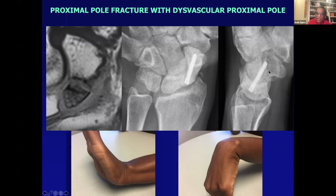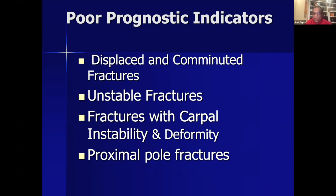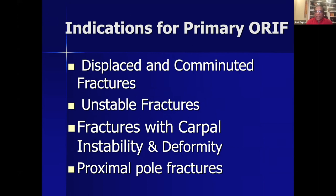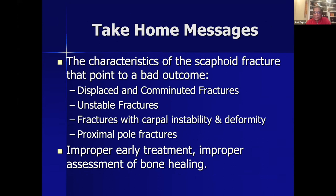Prognostic indicators are displaced and comminuted fractures, unstable fractures, fractures with carpal instability and deformity, and proximal pole fractures. Indications for primary management are the same four categories. Improper early management and improper assessment of bone healing are additional factors. Take-home message: displaced fractures, comminuted fractures, unstable fractures, fractures with carpal instability and deformity, and proximal pole fractures — these all require primary surgical management.